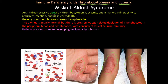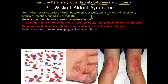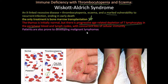It is an X-linked recessive disease with thrombocytopenia, eczema, and marked vulnerability to recurrent infections, usually ending in early death. The only treatment is bone marrow transplant. The thymus is initially normal, but there is progressive age-related depletion of T cell lymphocytes, with T cells depleted from peripheral blood and lymph nodes, resulting in a recurring loss of cellular immunity.